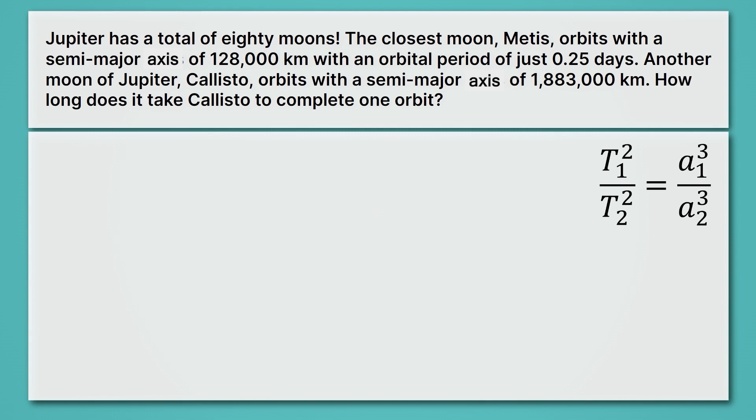Remember, the thing that we don't know as much information about is always going to be thing number one. So we're looking for info about Callisto. So we're going to make its orbital period number one, and we're going to say we don't know that. All right, with that little hint and little start, I recommend you pause the video, try to finish this one out, and come back here and see if you get it right. All right, well, let's continue listing our variables. The orbital period of the second thing would be of Metis, which is 0.25 days. Then we have the semi-major axis of thing one. So that, again, is the farther away moon, Callisto, and that's 1,883,000 kilometers. Very far away. Meanwhile, A2 is going to be just 128,000 kilometers. Still a pretty long distance.